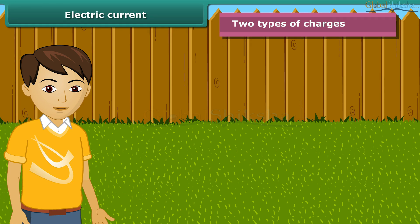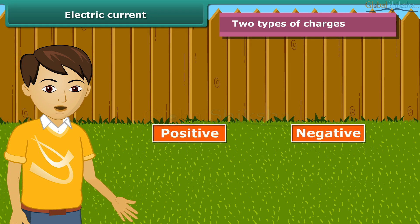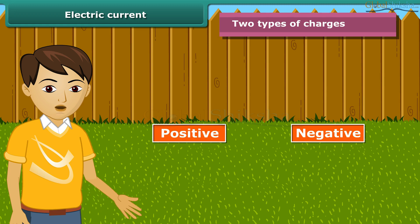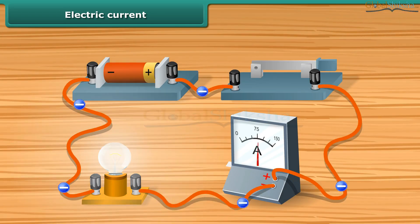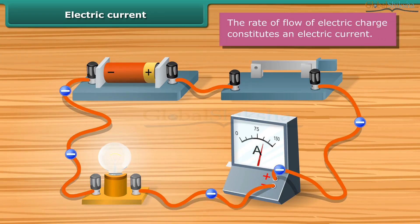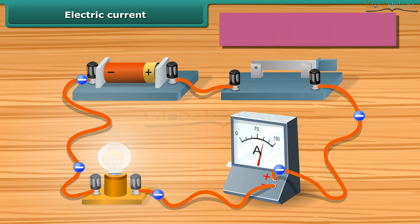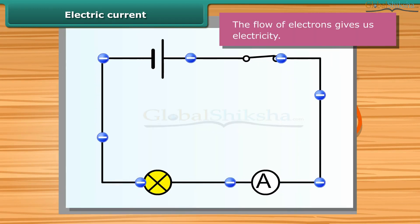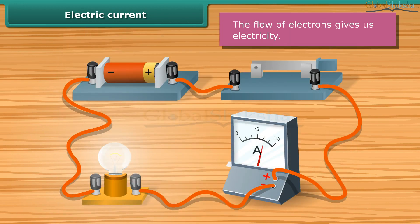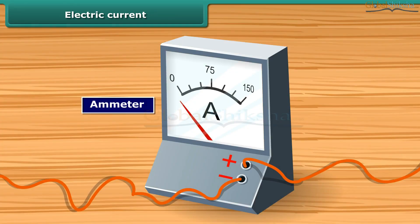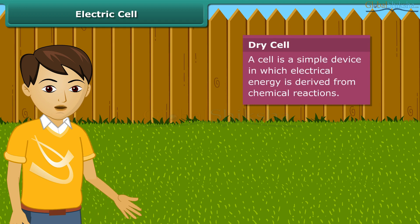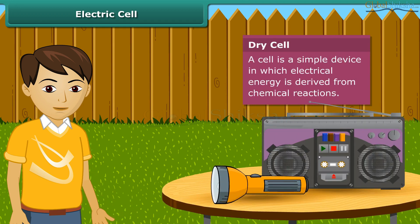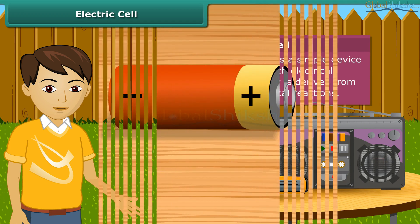We have just studied about electric charges and the forces they exert on one another. There are two types of charges: positive and negative. When charges transfer from one body to another, the bodies are said to be charged. The moving or flowing charges produce an electric current. An electric current consists of a movement of negative charges, that is, electrons. The flow of electrons gives us electricity, and electric current is measured by a meter.